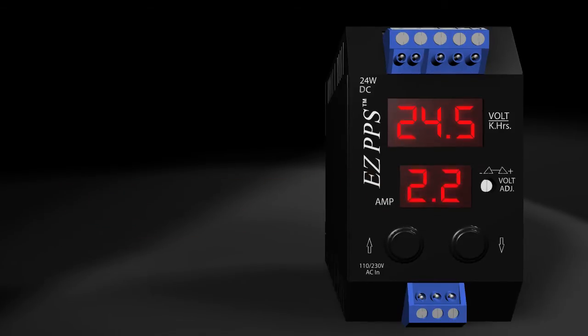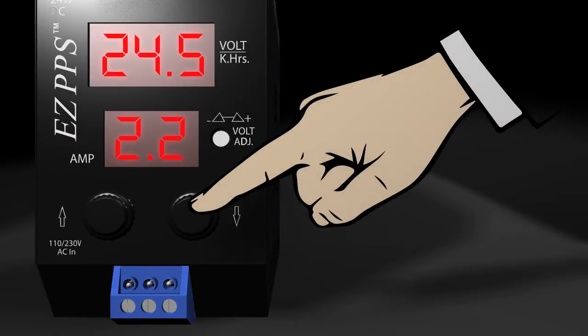Pressing either button on the front will make the unit start cycling through a list starting with maximum power, peak current recorded, completed hours of operation, remaining hours of operation, and firmware revision.